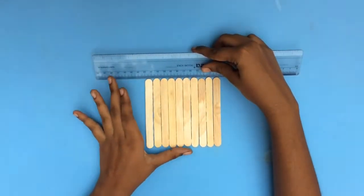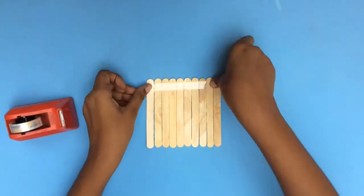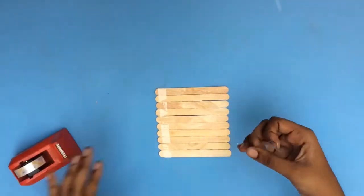Arrange all your popsicle sticks in a line and stick them together using cello tape to make sure that they don't fall apart when you cut them.